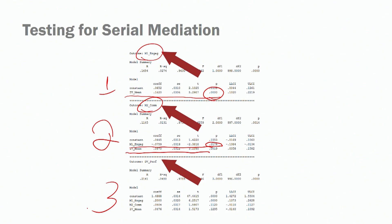Then we have step three, where we look for the relationship between our second mediator — commitment — and our outcome variable, performance. We look at commitment and performance. This is not significant; p is not less than 0.05. So we do not have evidence for a serial mediation model, because our third step is not significant — we don't find a significant relationship between commitment and performance.